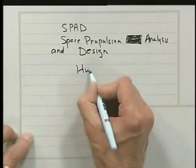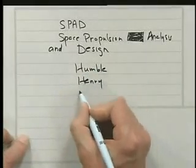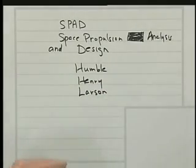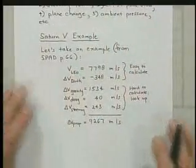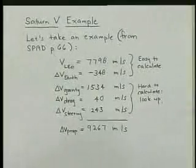That's by three authors: Humble, Henry, and Larson. Highly recommended for analyzing launch vehicle propulsion systems. I'll be referring to it from time to time.